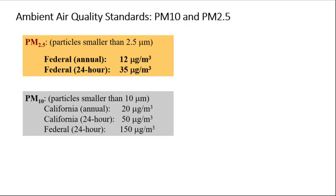PM10 and PM2.5 are both criteria air pollutants, and therefore have ambient air standards. These are listed here. Notice that both short-term 24-hour and long-term annual standards exist. Note also that the annual standards are lower in concentration threshold value than the 24-hour standards. For example, for PM2.5, the 24-hour standard is 35 micrograms per meter cubed, while the annual standard is less, 12 micrograms per meter cubed. The standards are therefore designed to be protective of short-term high daily episodic exposure that can cause acute health effects, and lower concentration sustained exposure that can cause chronic health effects.